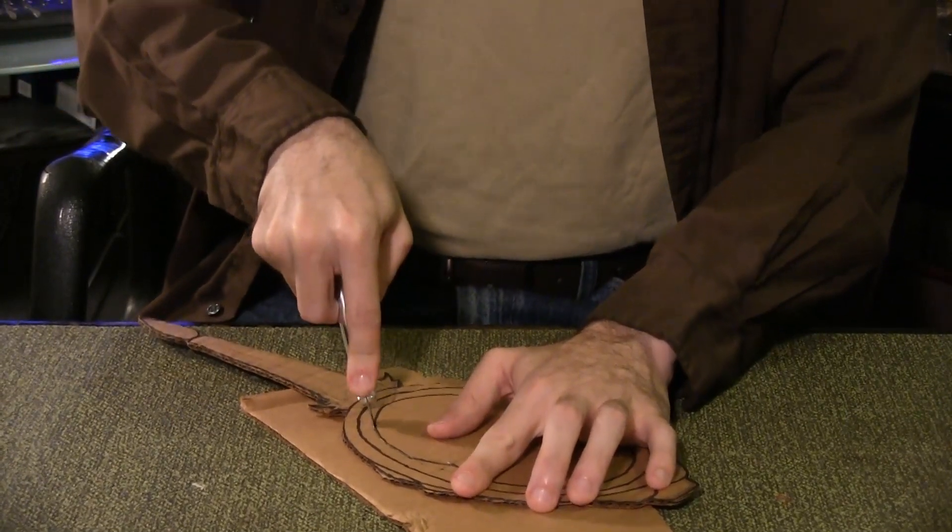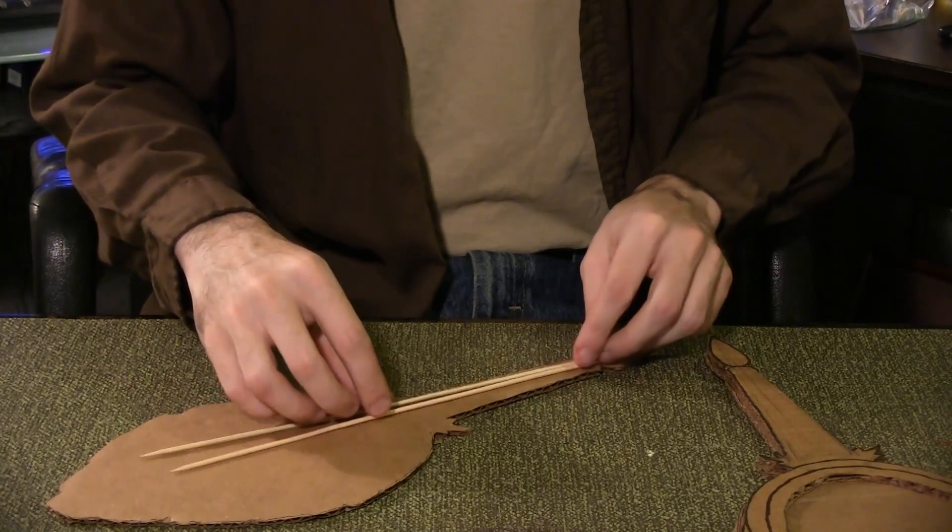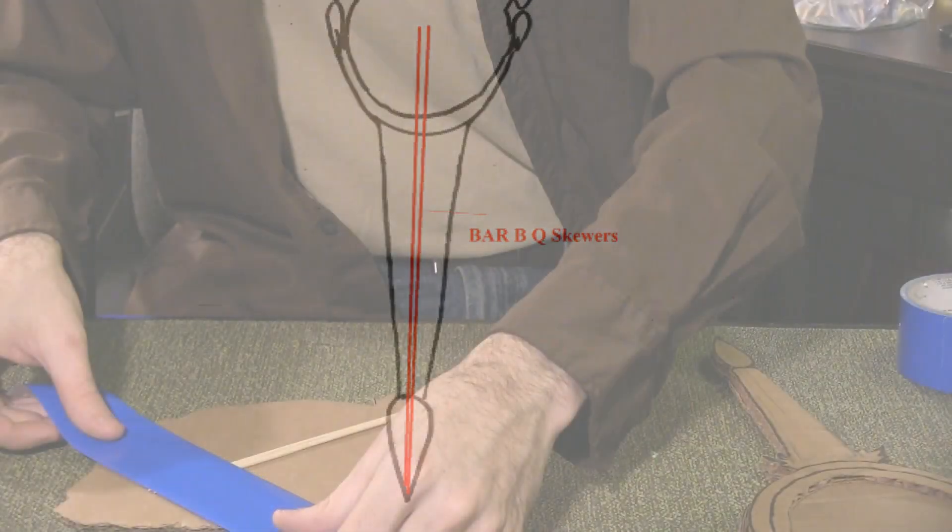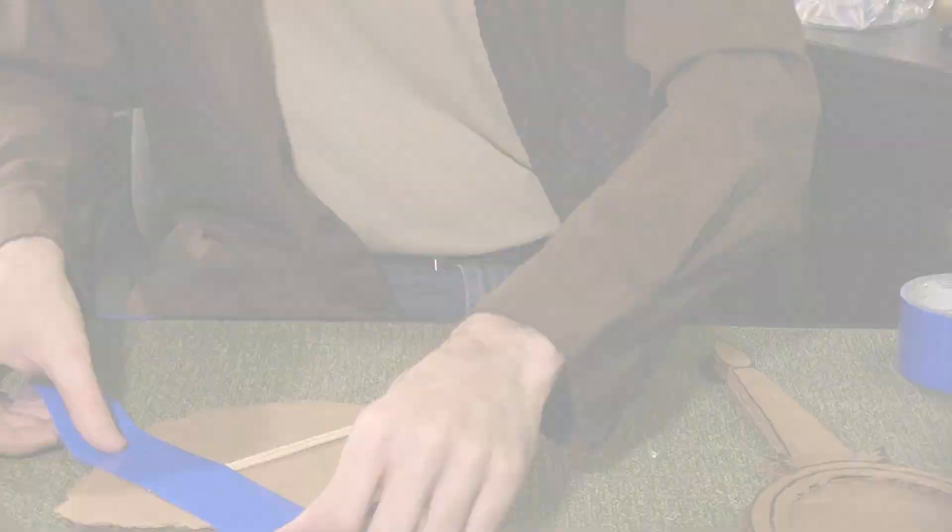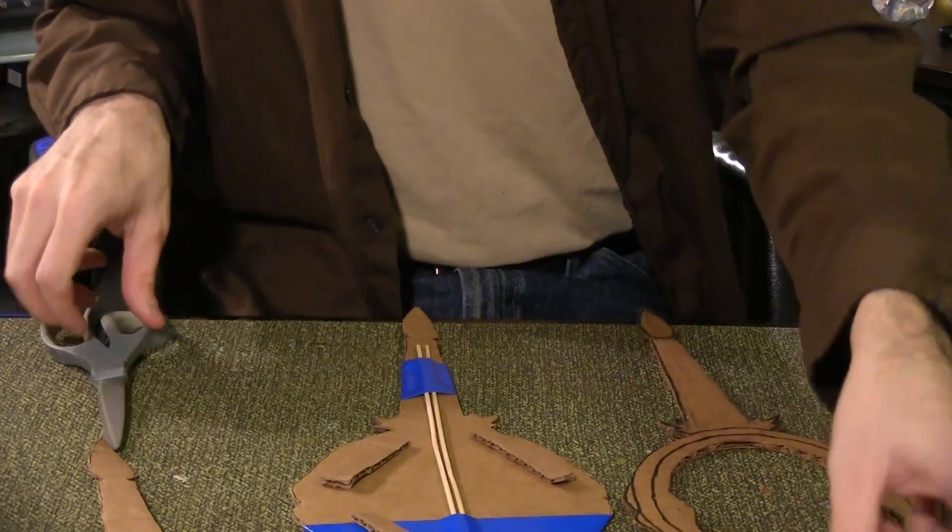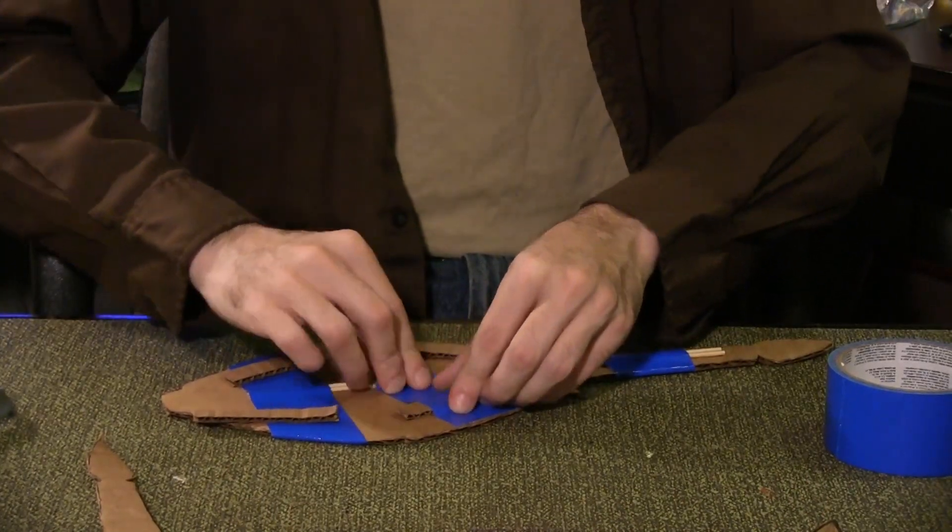Place two barbecue skewers on one of the intact templates so the entire handle is secure. Duct tape the skewers in place. Cut four thin cardboard rectangles, place them as spacers on the mirror, and duct tape them in place. Be sure they're on the same side as the barbecue skewers.